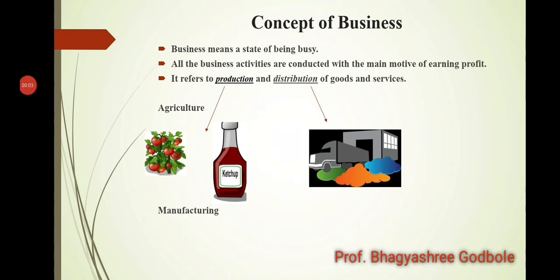In simple words, business means producing or purchasing something, adding a profit margin to it, and then selling it to the final consumer to earn profit. Business refers to production and distribution of goods and services. When we talk about production, it means growing something — for example, growing mangoes or tomatoes on a piece of land. When we convert those tomatoes using machinery into tomato ketchup, that is manufacturing. So goods can be of two types: agricultural and manufactured.